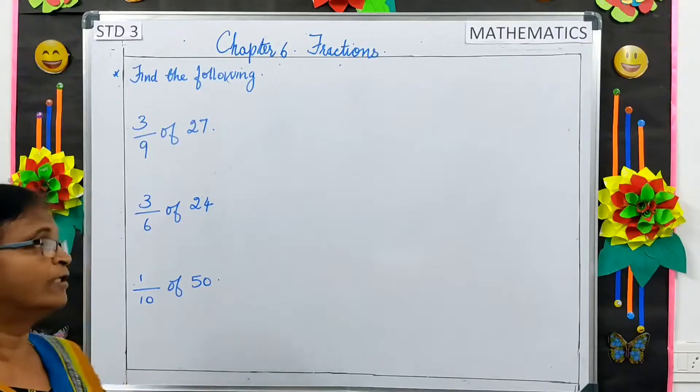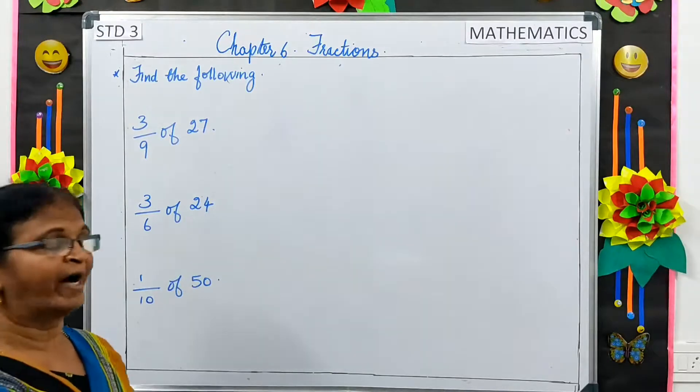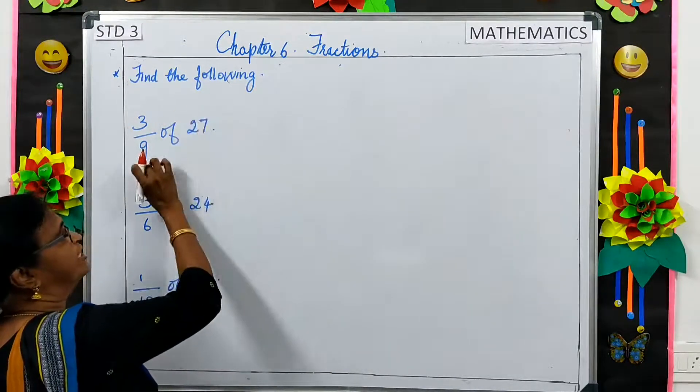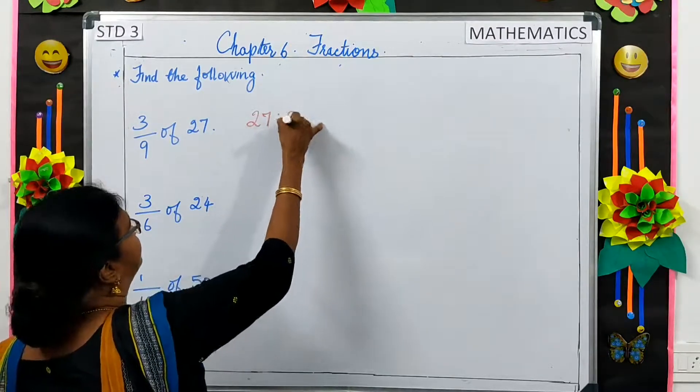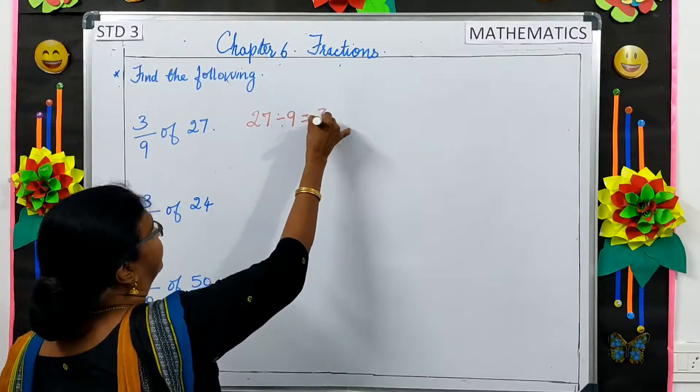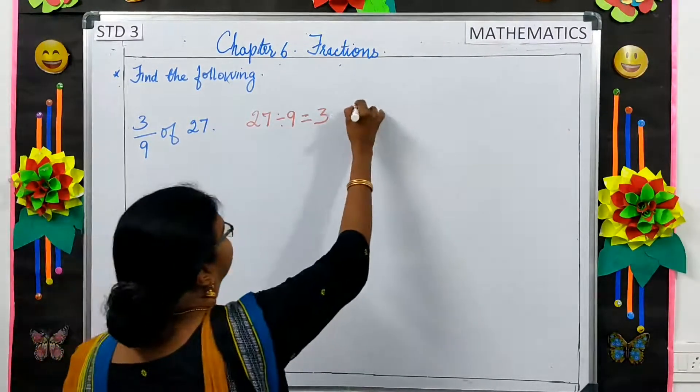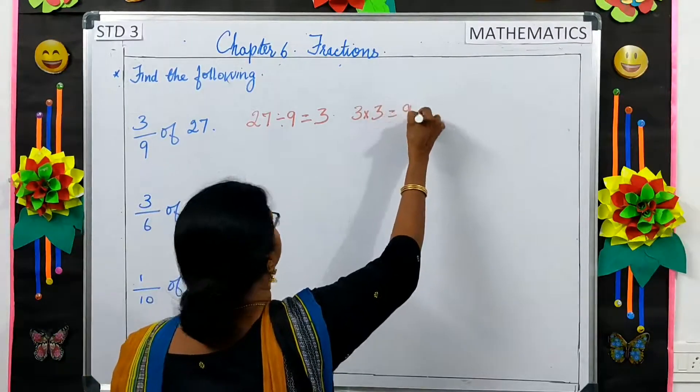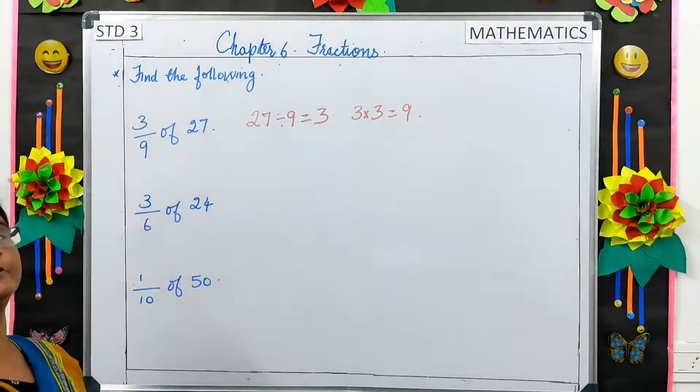Find the following. 3 by 9 of 27. By 9 means to divide, so we will divide 27 by 9. That is 3. Then, of means to multiply. 3 multiplied by 3, it is equal to 9. So, 3 by 9 of 27 is 9.